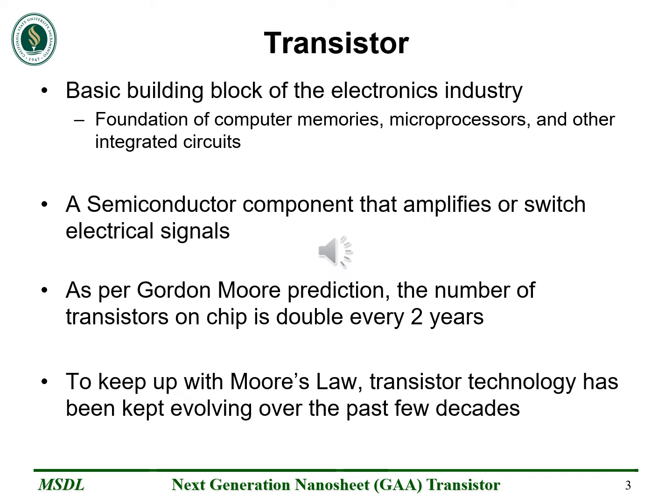Let's start with transistor history. Transistors are the basic building block of the electronic industry and foundation of computer memories, microprocessors, and other integrated circuits. Transistors are semiconductor components that can be used for amplifying or switching electrical signals. The number of transistors on chips doubles every year as per Gordon Moore's prediction, and to keep up with Moore's Law, transistor technology has kept evolving over the past few decades.